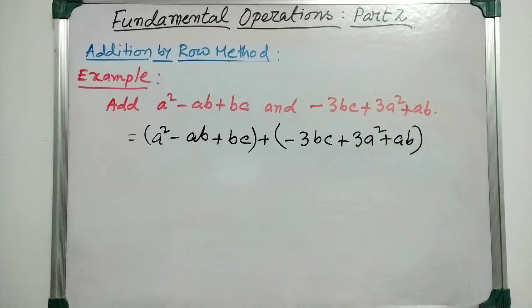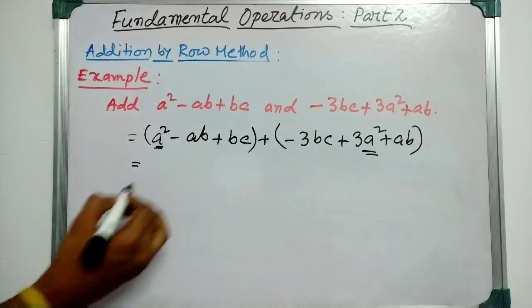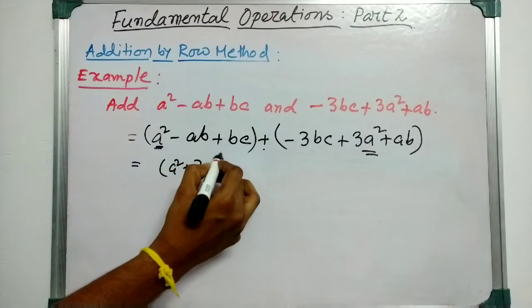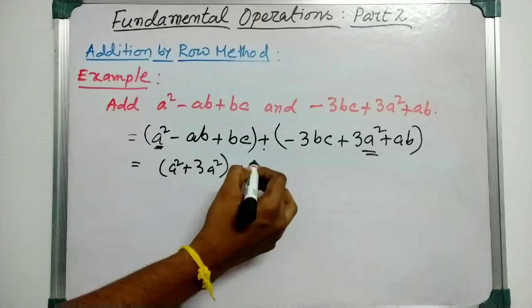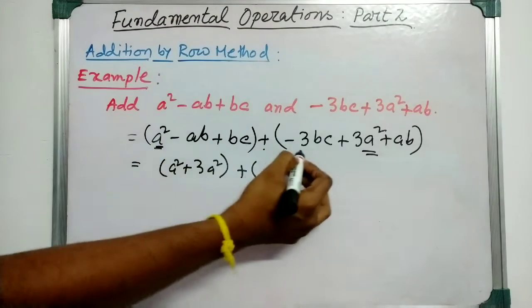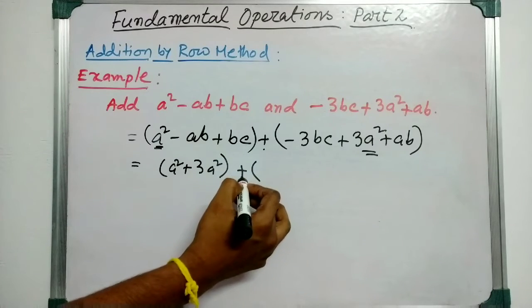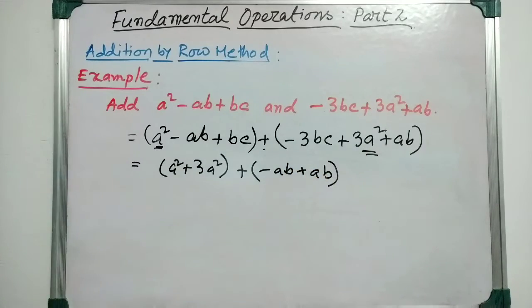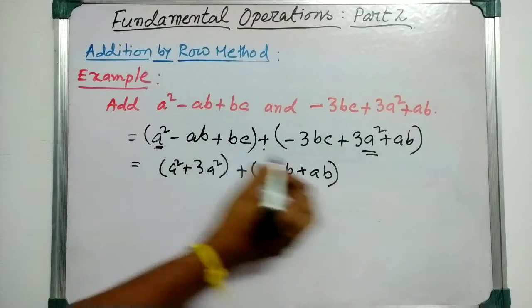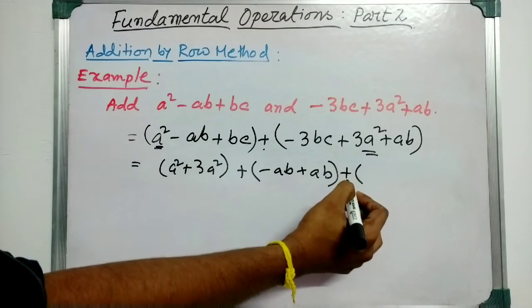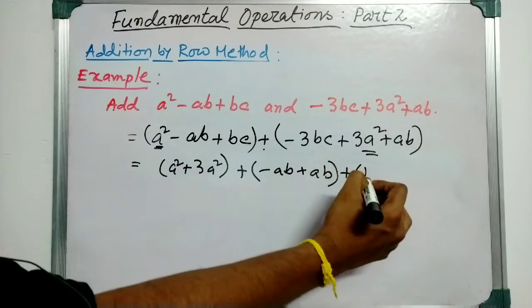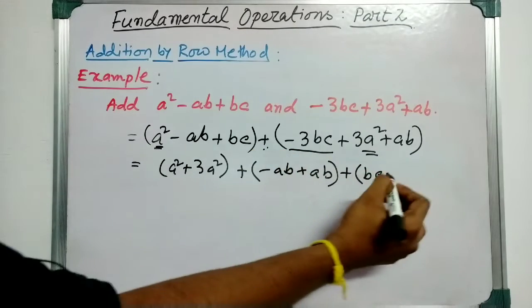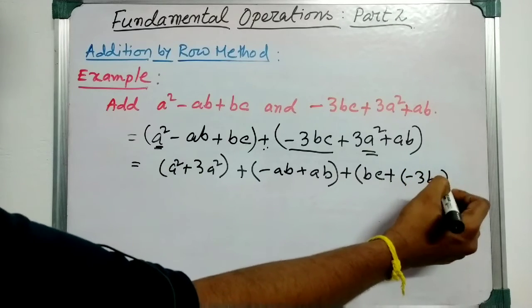The next step is to segregate the like terms. Here s² and 3s² are like terms, so we write them in a bracket: (s² + 3s²). Then minus ab and plus ab go in the next bracket: (minus ab + ab). Then bc and minus 3bc go in the next bracket: (bc + minus 3bc).